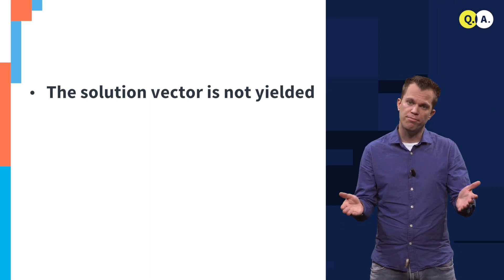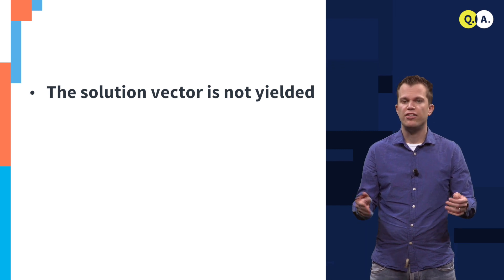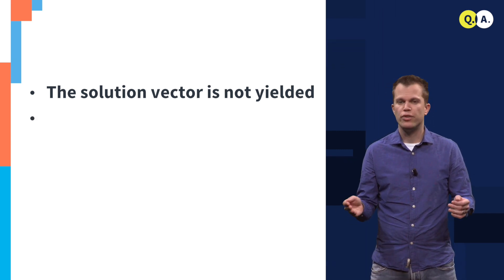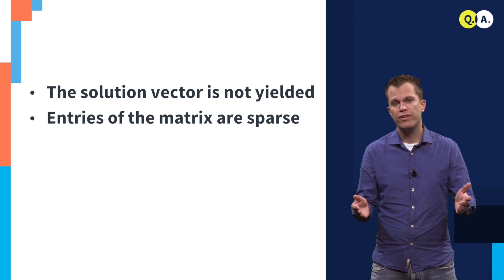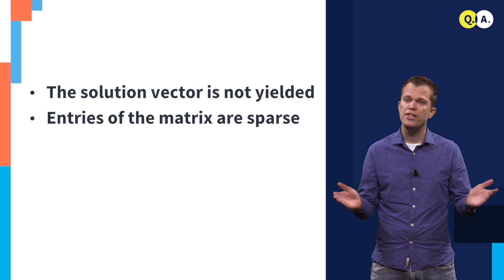A limitation is that we need that the entries of the matrix for the linear system are sparse. This means that we require that the matrix contains mostly zeros.